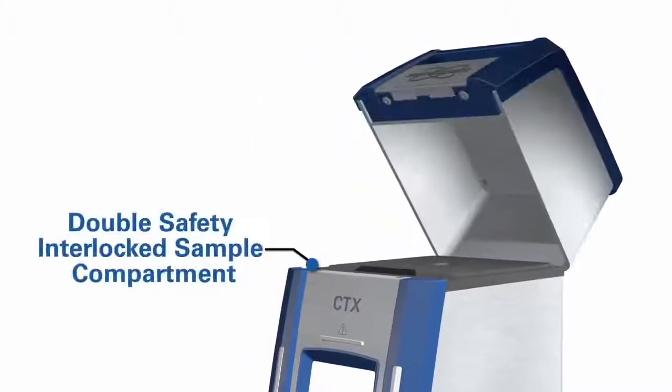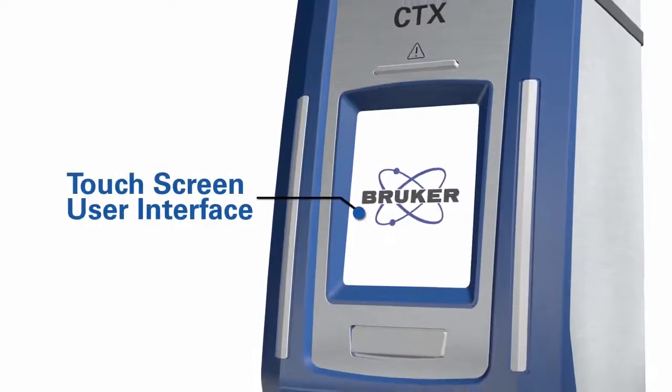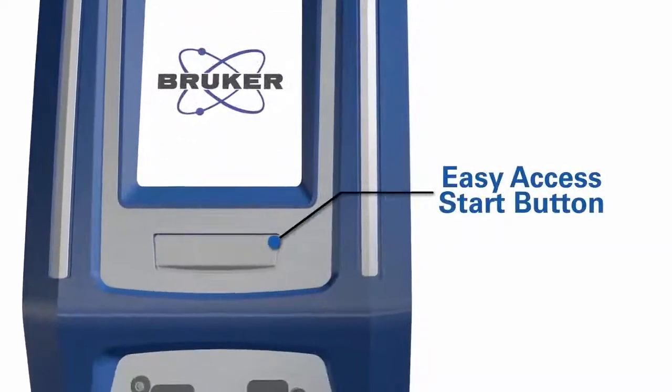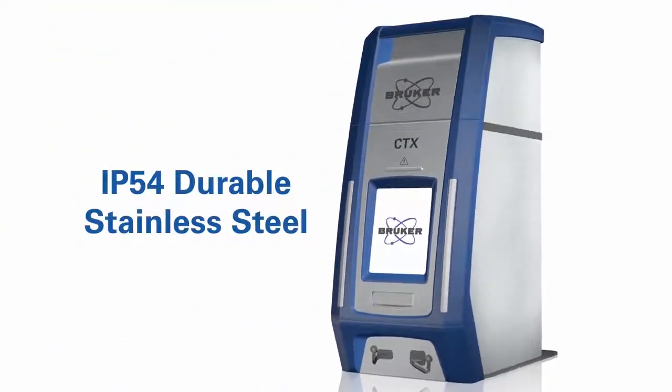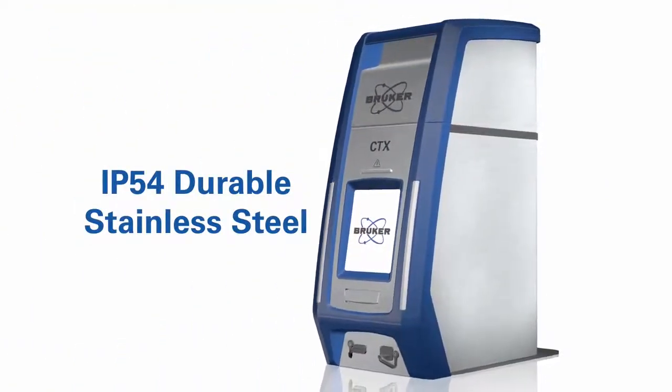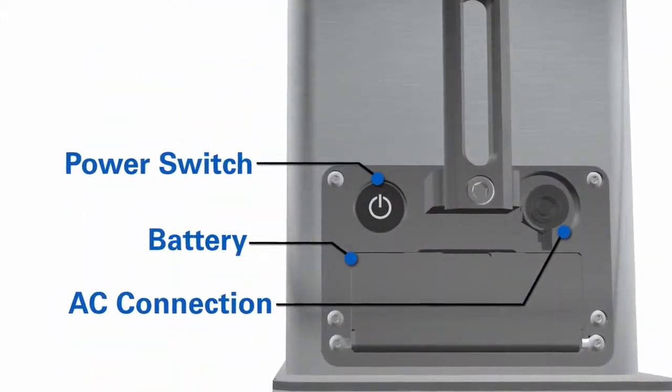The CTX has a double safety interlocked sample compartment, a touchscreen user interface, and an easy access start button, all encased in IP54 sealed durable stainless steel. The battery, AC connection, and power switch are located at the back of the unit.